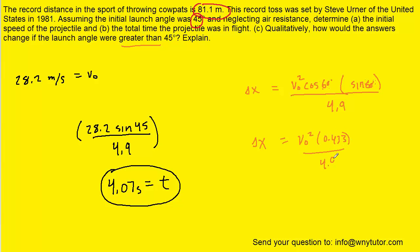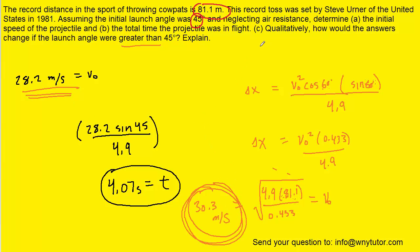We could then solve this for V0 just like we did before. For delta x we're still using 81.1. When we compute that we get about 30.3 meters per second. Compare that speed with the speed we determined in part a. We can see it would have to be greater. So the correct answer to part c would be greater speed.